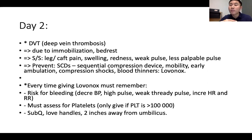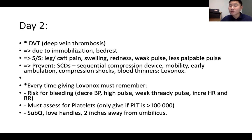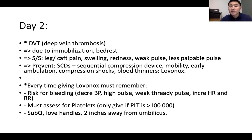When giving Lovenox, always remember the risk for bleeding — Lovenox is an anticoagulant. Classic signs of bleeding are decreased blood pressure, high and weak thready pulse, increased heart rate, and increased respiratory rate. Only give Lovenox if platelets are more than 100,000. Lovenox is given subcutaneously at the love handles area, two inches away from the umbilicus. Monitor platelets every time.